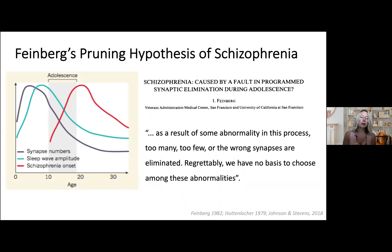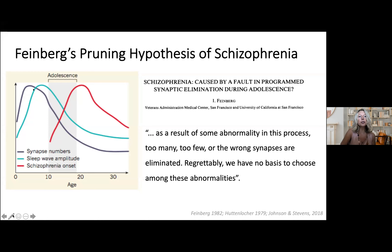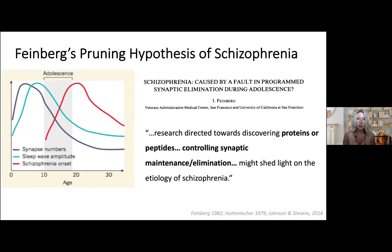A number of years ago, Irwin Feinberg proposed the pruning hypothesis of schizophrenia, based on anatomical studies paired with imaging data and sleep wave amplitude changes across development. He noted striking decreases in synapse numbers and sleep changes occurring in this adolescent window — right around the onset of disorders like schizophrenia and bipolar — and proposed that aberrant pruning, either too many or too few synapses being pruned, could underlie some of these disorders.